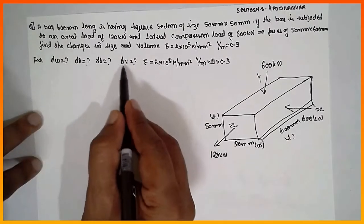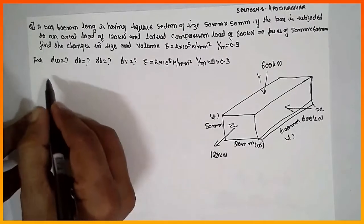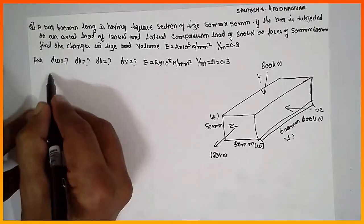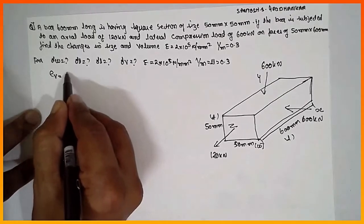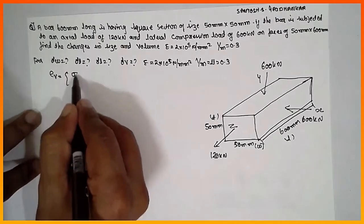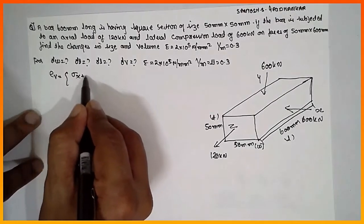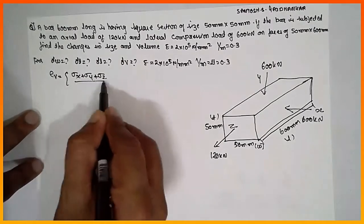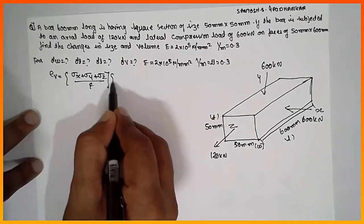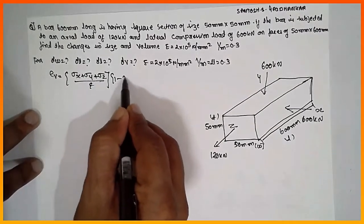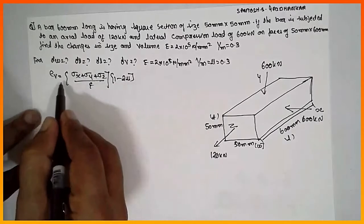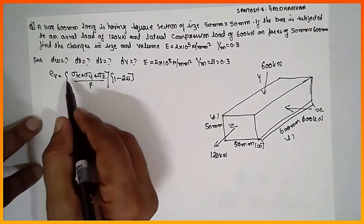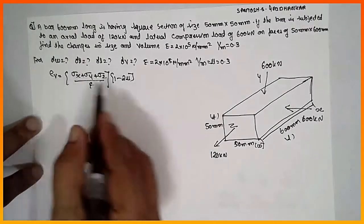Now we know that in order to find out volumetric strain and change in volume, the formula is: volumetric strain εᵥ = (σx + σy + σz) / E × (1 − 2μ). First, I am going to calculate each stress component.